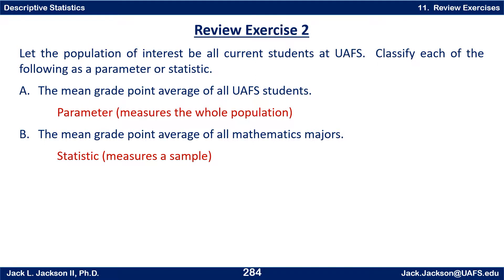Since the population is all UAFS students, when we describe something about all UAFS students — such as the mean grade point average of all UAFS students — we're talking about a parameter, because it measures the whole population. So A is parameter. For B, mathematics majors do not constitute the entire population of all UAFS students, so we're talking about a sample. The mean grade point average of that sample would be a statistic. B is statistic.